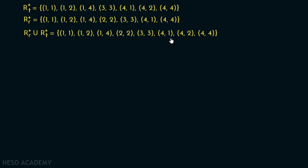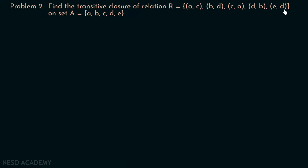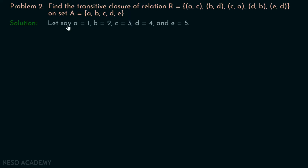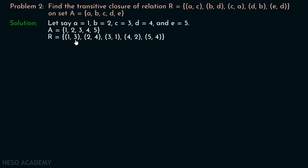Now let's discuss Problem 2. Find the transitive closure of relation R consisting of ordered pairs (A,C),(B,D),(C,A),(D,B),(E,D), defined on set A = {A,B,C,D,E}. For simplicity, let A=1, B=2, C=3, D=4, E=5. After replacement, set A = {1,2,3,4,5} and relation R = {(1,3),(2,4),(3,1),(4,2),(5,4)}.